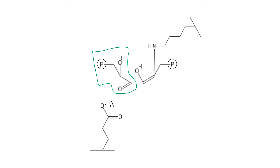This fragment, which was originally carbons 4, 5, and 6 of my sugar, leaves as G3P—glyceraldehyde-3-phosphate. So now what I'm left with, bound to my enzyme, is carbon-1, carbon-2, carbon-3. This unit is going to become dihydroxyacetone phosphate.